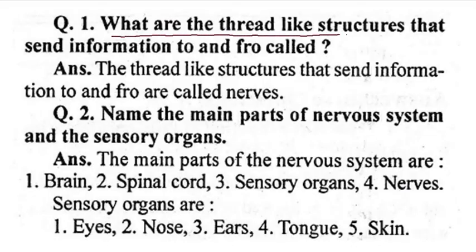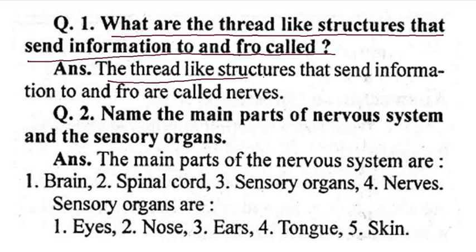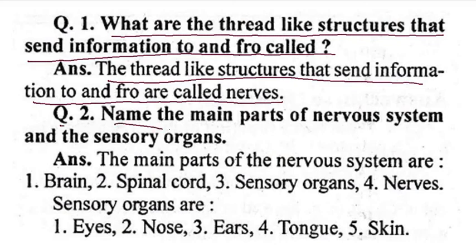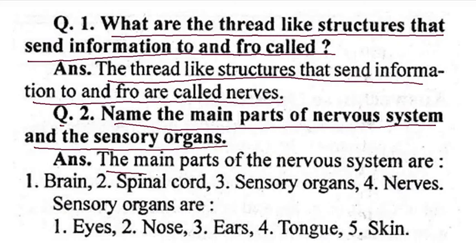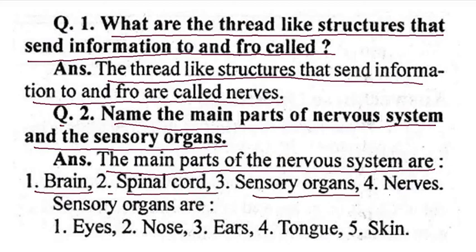What are the thread-like structures that send information to and from the brain? The thread-like structures that send information are called nerves. The main parts of the nervous system are: first the brain, second the spinal cord, third the sensory organs, and fourth the nervous sensory organs. The sense organs are eyes, nose, ears, tongue, and skin.